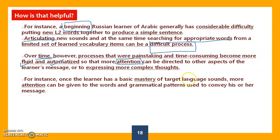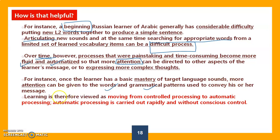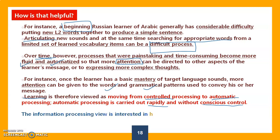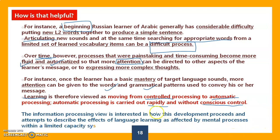Once the learner has basic mastery of the target language sounds, more attention can be given to words and grammatical patterns to convey the message. Learning moves from controlled processing to automatic processing. Automatic processing is carried out rapidly and without conscious control — speaking or writing the language becomes easy and automatic. The information processing view is interested in how this development happens using mental processes.